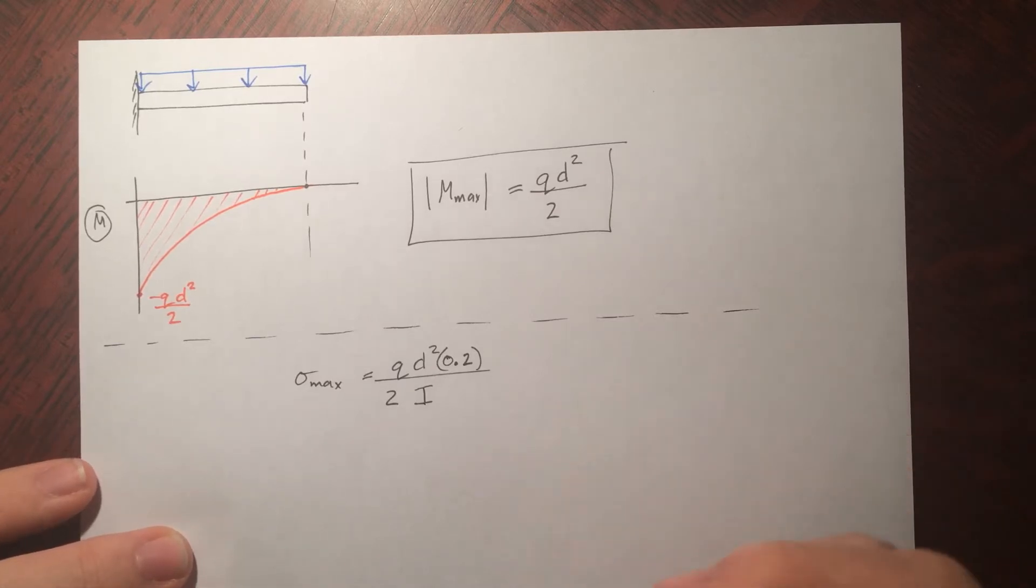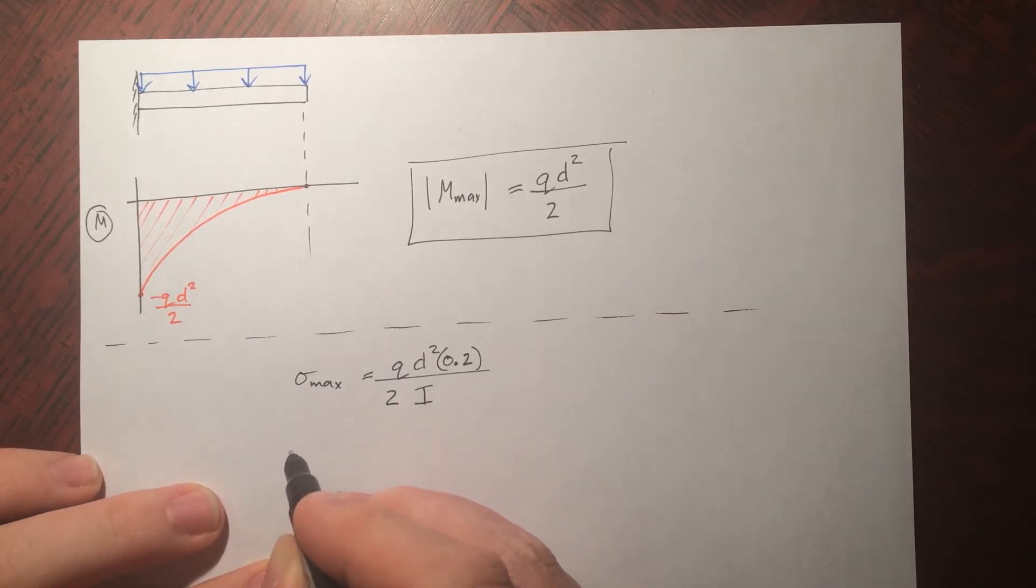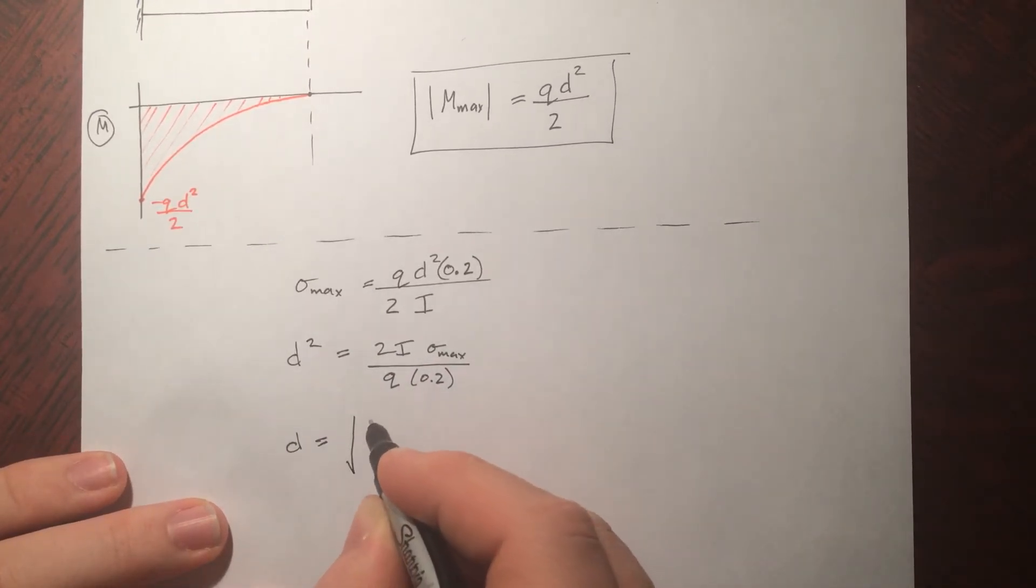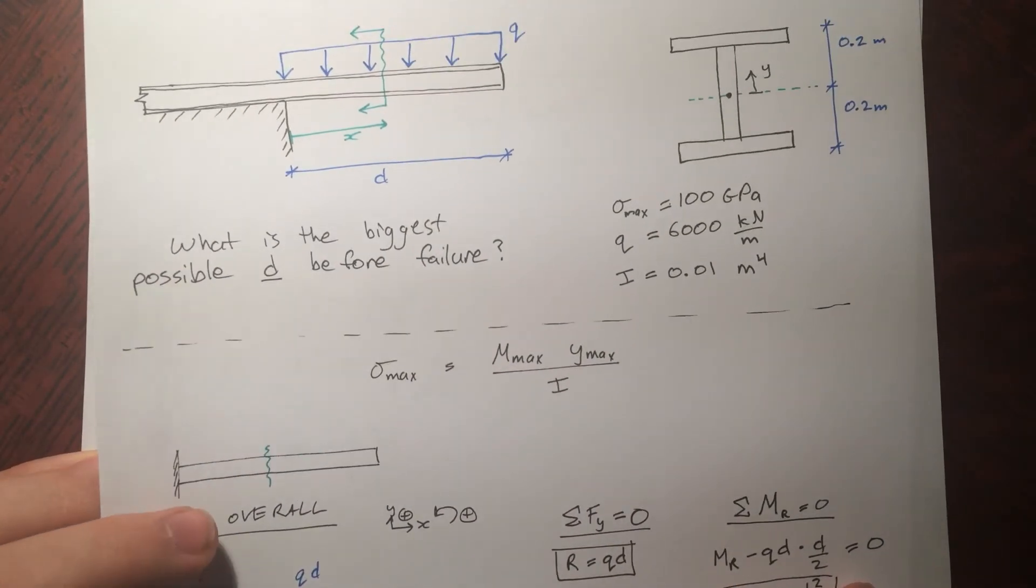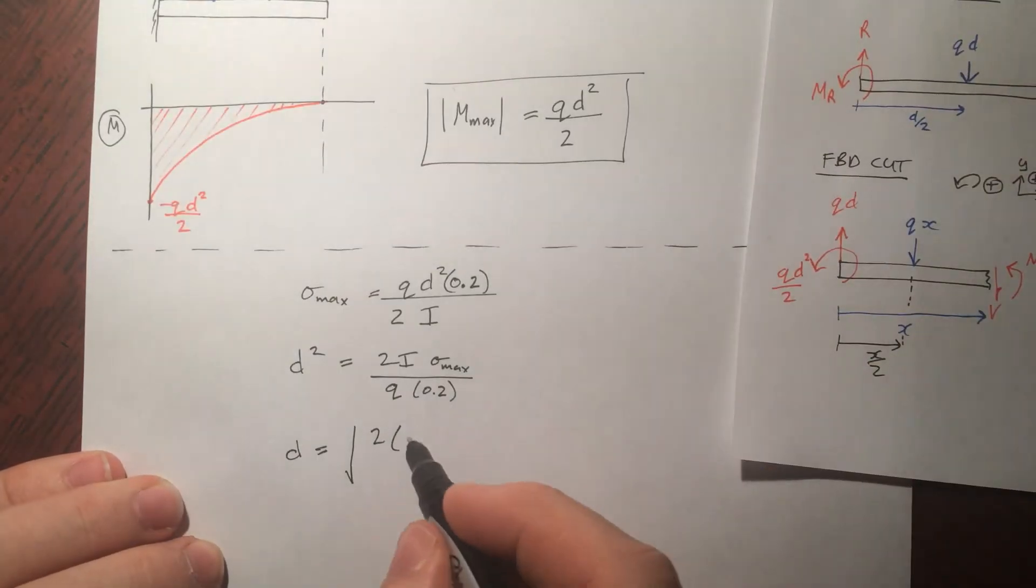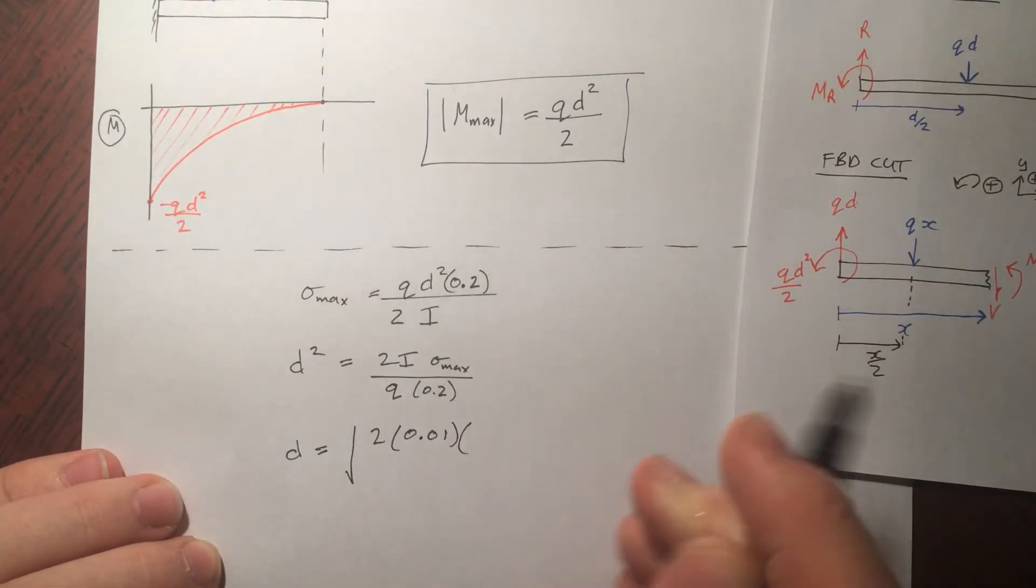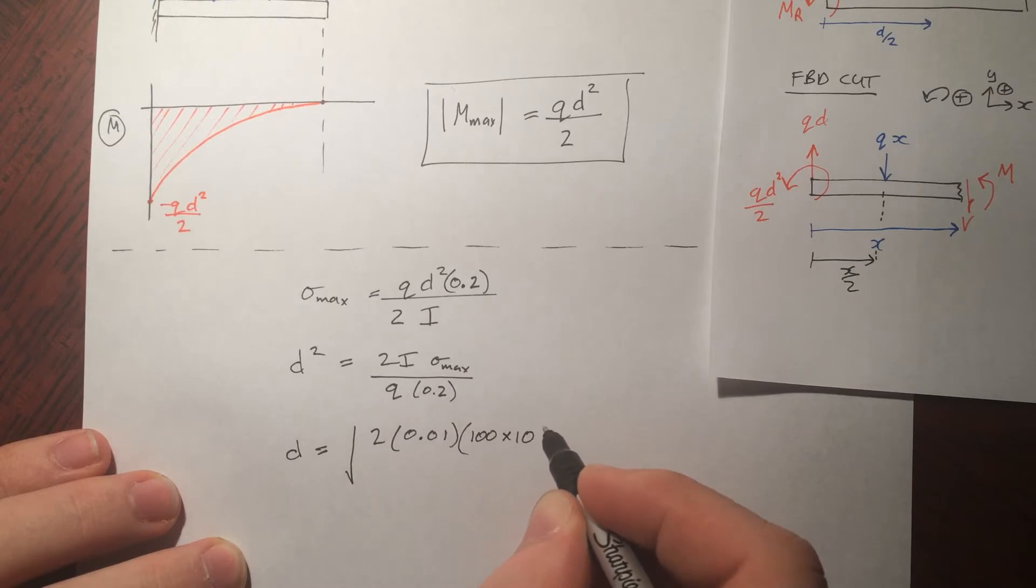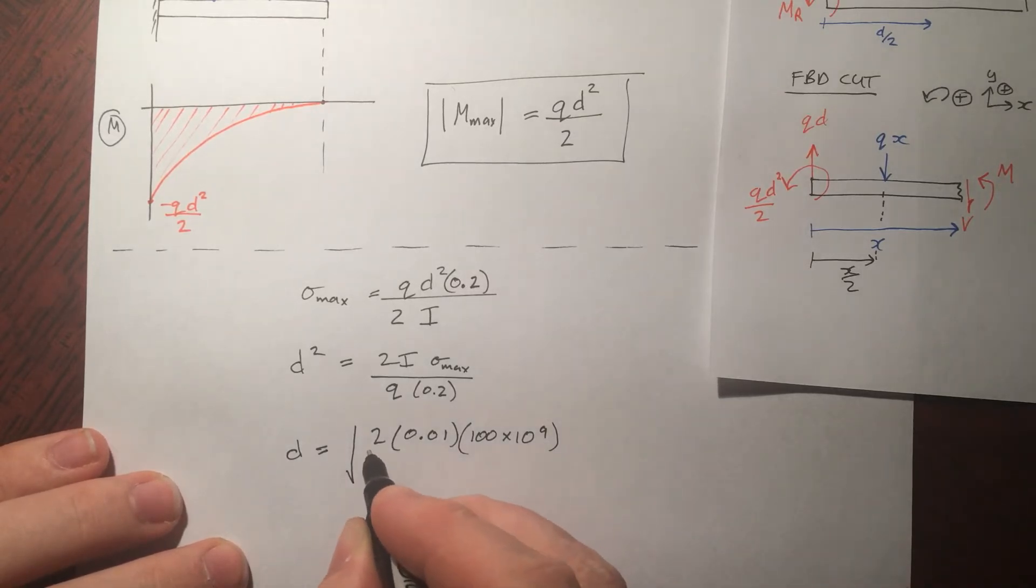So then moving along and solving for d, and then plugging in the values. Once again, I'm putting everything in terms of the fundamental unit, so we don't need to decipher it in terms of kilonewtons per millimeter or something weird. Just newtons and meters.